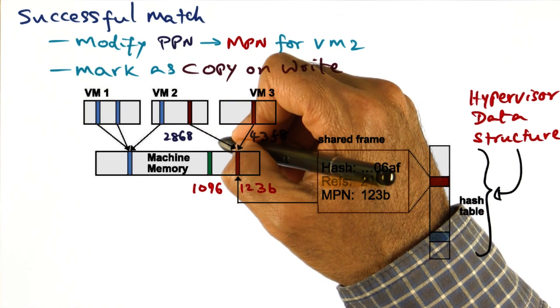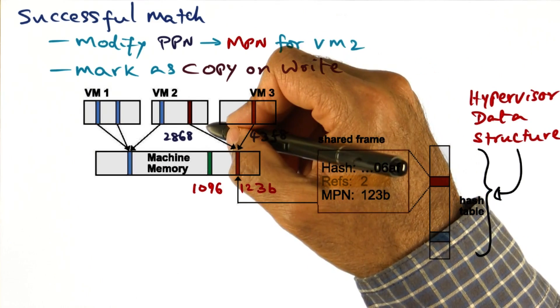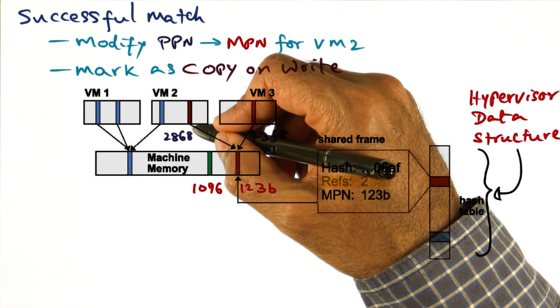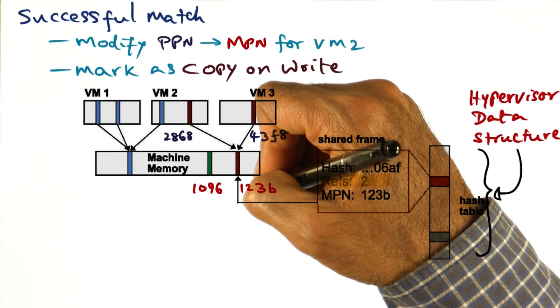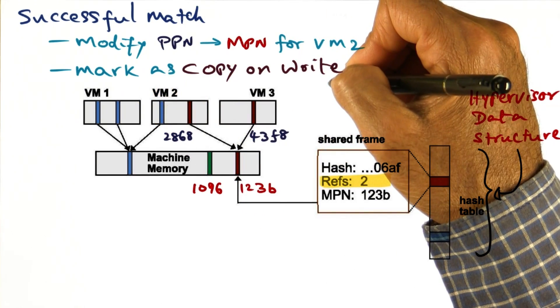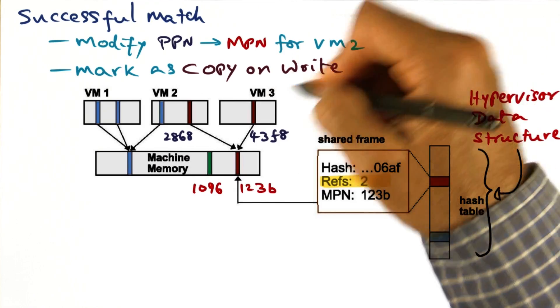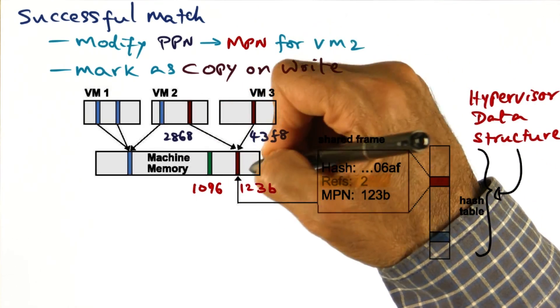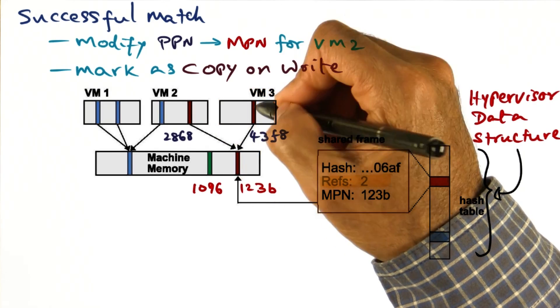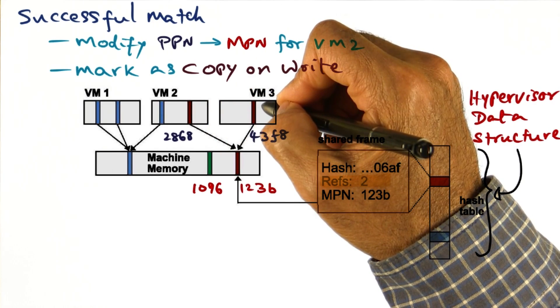And we're also going to remember that these two mappings between PPN 2868 to 123B, 43F8 to 123B are copy on write entries, indicating that they can share this page so long as these two virtual machines are reading it. But if any one of them tries to write it, at that point,